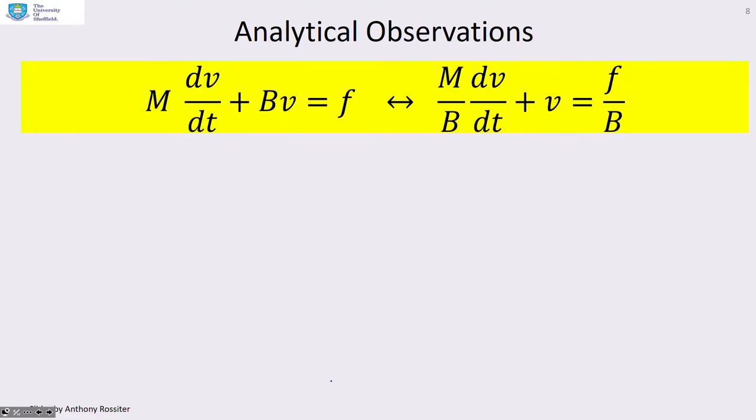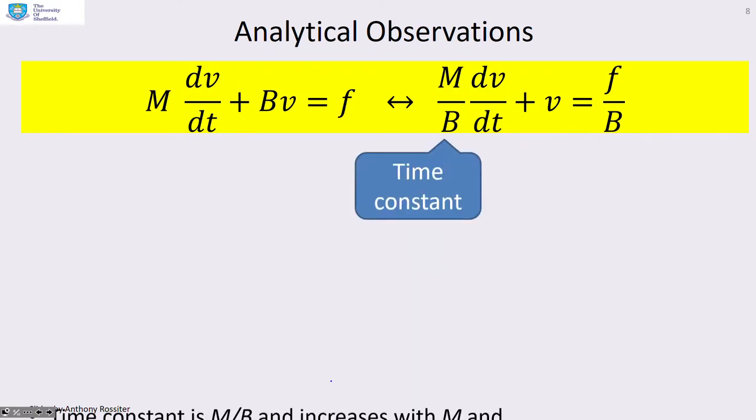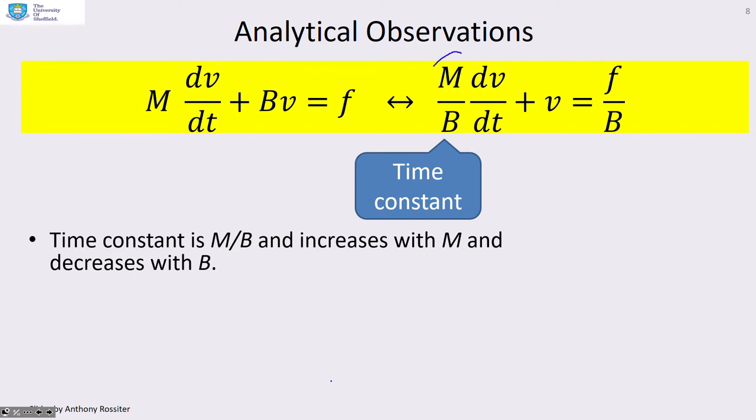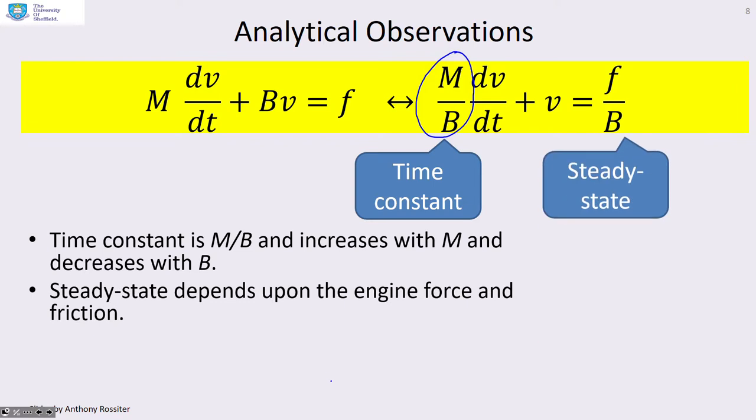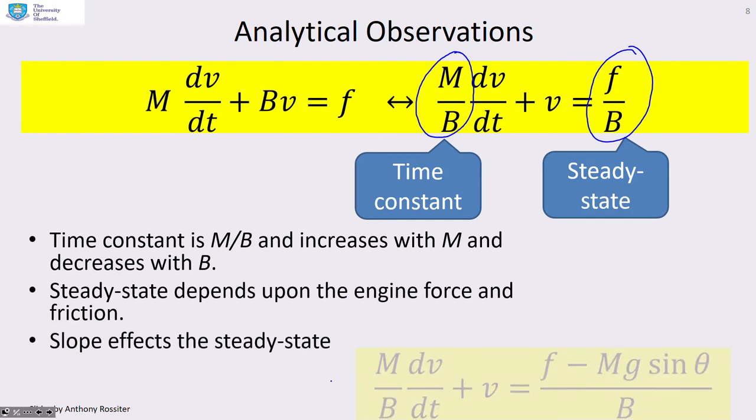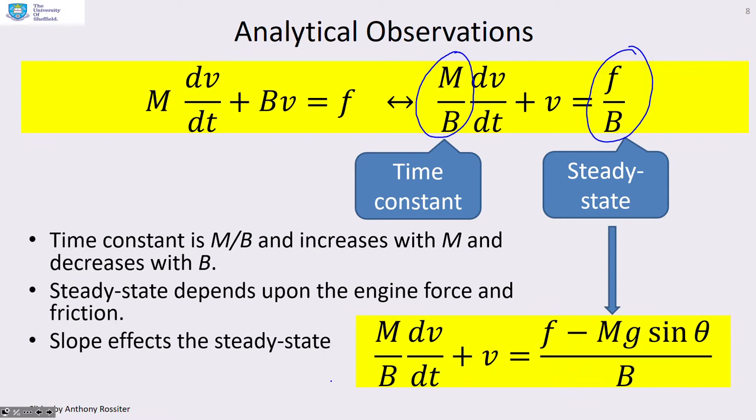So let's look at the maths and see if the maths reinforce what we've just observed. The time constant is given by M over B. So what you can see is if you increase M, the time constant goes up—you get slower. If you increase B, the time constant gets smaller, so you're faster. Similarly, let's look at the steady state. So if you increase B, you can see the steady state gets smaller. But if you increase F, the steady state gets faster. Now, what about the slope? You can also see that the slope affects the steady state—you can see that from this bottom equation, this bit here—but does not affect the time constant.